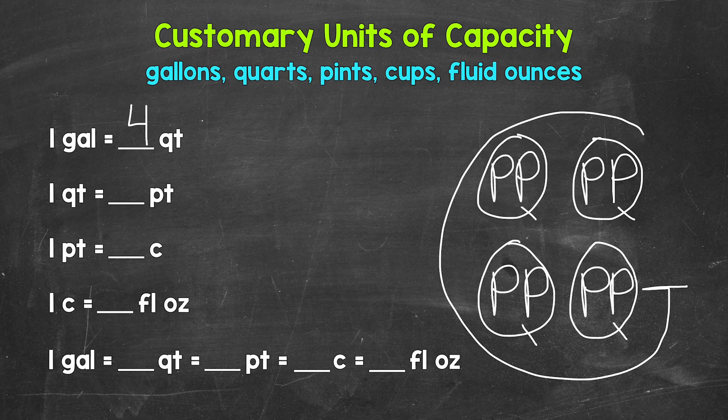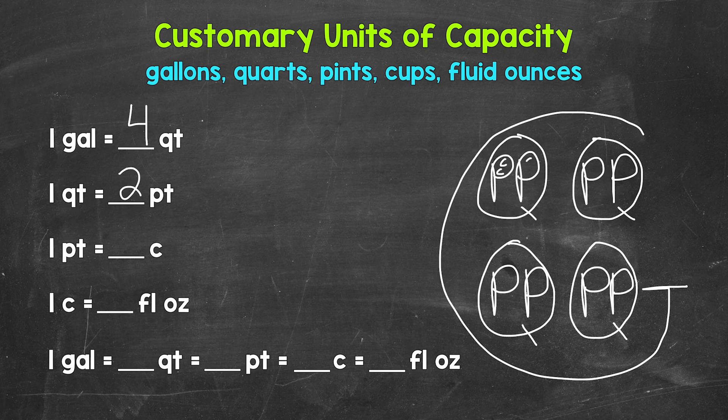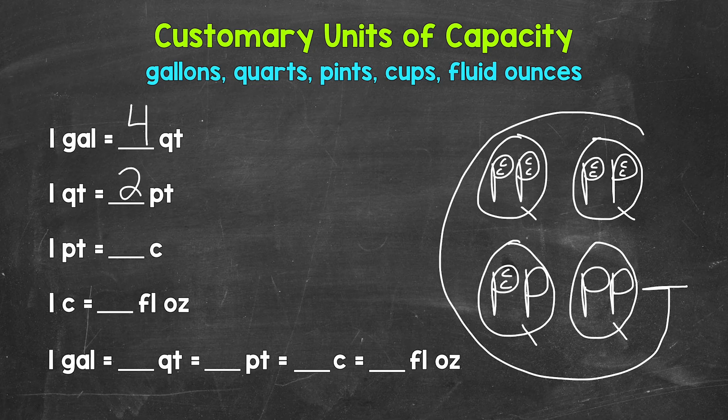So going over to the left, one quart equals two pints. Next, we have cups, one pint equals two cups. So let's put two Cs in each P. So two cups in each pint. So over on the left, one pint equals two cups.